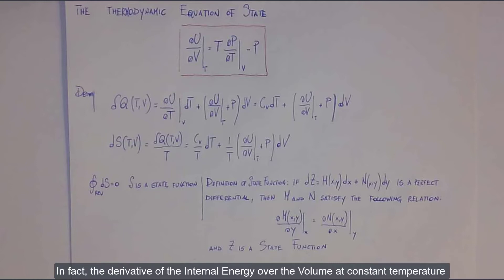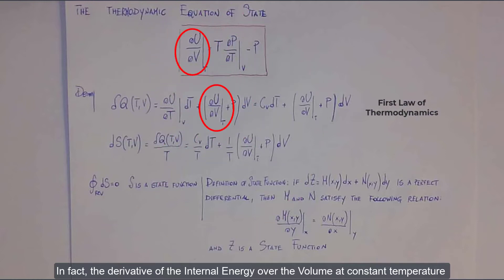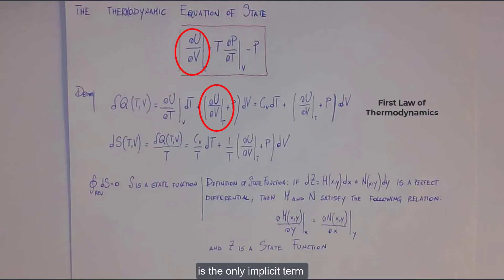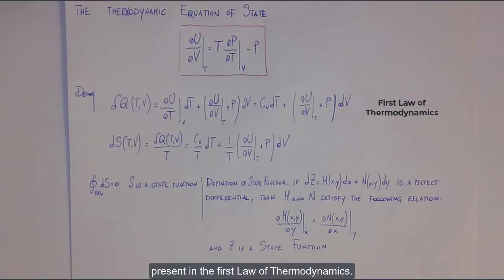In fact, the derivative of the internal energy over the volume at constant temperature is the only implicit term present in the first law of thermodynamics. Let us see where the thermodynamic equation of state originates.